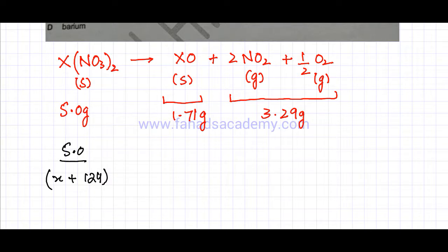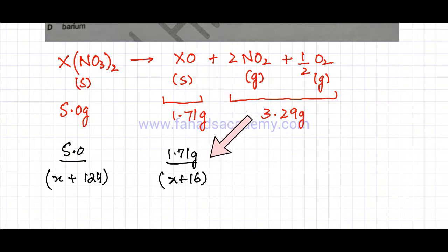And I'll do the same for this metal oxide. So the mass is 1.71 grams divided by the MR, which in this case is X plus 16. So it's mass over MR. These are the moles of the metal oxide and these are the moles of the metal nitrate, and the mole ratio suggests that the moles should be equal.